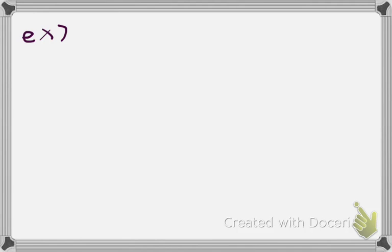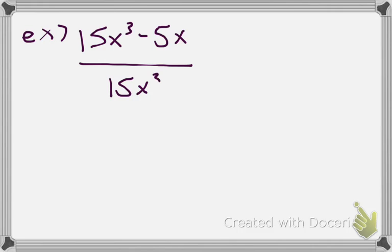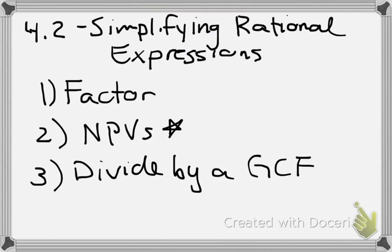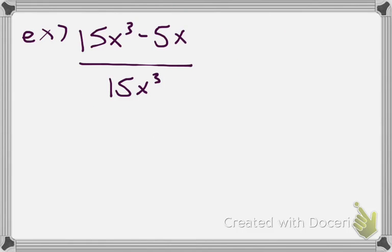The second example is a little bit tougher. In this one, if I look at something like 15x cubed minus 5x all over 15x cubed, let's go back to our start page. It says the very first thing we need to do is factor it. So let's factor the top and the bottom.